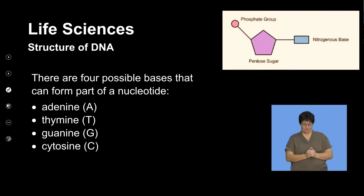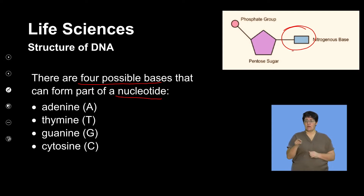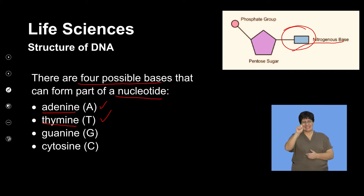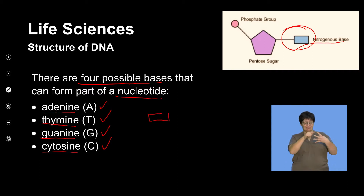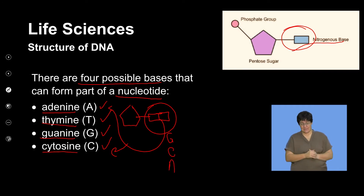There are four possible bases that can form part of a DNA nucleotide. These nitrogenous bases are: adenine (A), thymine (T), guanine (G), and cytosine (C). So the nitrogenous bases in the DNA molecule can be represented as T, G, C, or A.